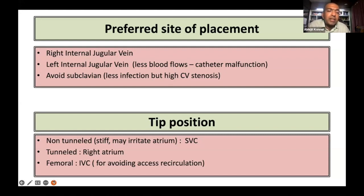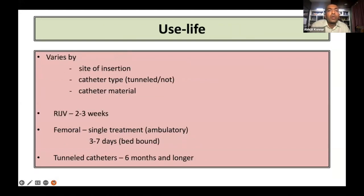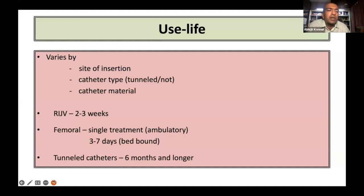For the femoral catheter, the tip is usually placed in the internal jugular vein. The shelf life for this catheter varies depending on the site of insertion, catheter type, and catheter material. Typically, the right internal jugulars are used anywhere from two to three weeks. The femoral catheter can be a single use or range from zero to seven days for patients who are bed-bound. Tunnel catheters can be used from six months and longer depending on the site and center-specific characteristics.